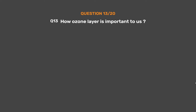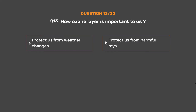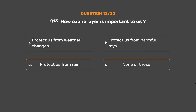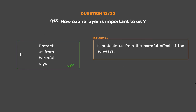Question number 13: How is the ozone layer important to us? Option A: Protects us from weather changes. Option B: Protects us from harmful rays. Option C: Protects us from rain. Option D: None of these. The correct answer is Option B, Protects us from harmful rays. It protects us from the harmful effect of the sun's rays.